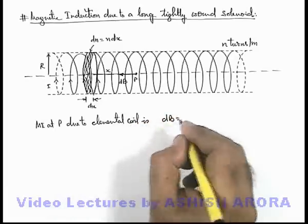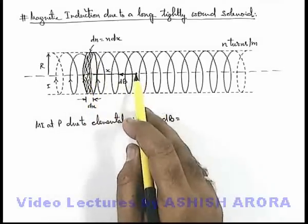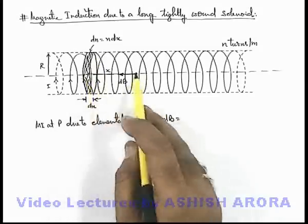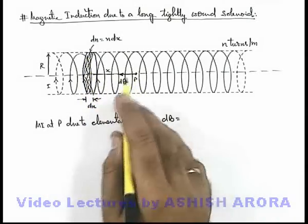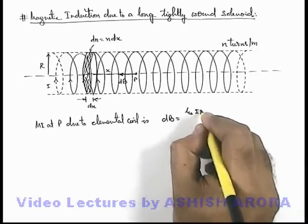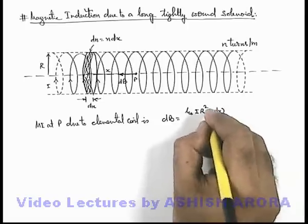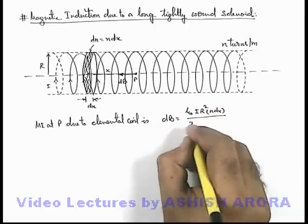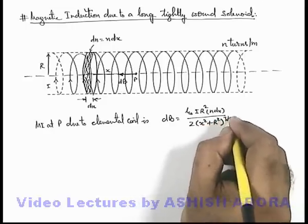This dB can be given by the expression of a circular coil at a point located at a distance x on the axis of this coil. So this magnetic induction is given by μ₀ i r² times the number of turns n dx, divided by 2(x² + r²)^(3/2).